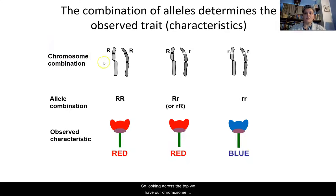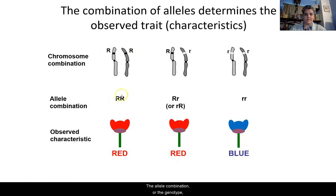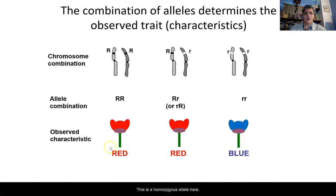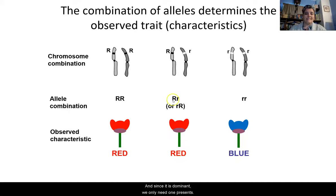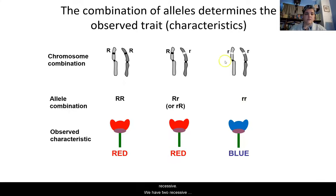The combination of these alleles determines the observed trait — combination of alleles determines phenotype. Looking across the top: we have a capital R and capital R. The genotype is RR, and the phenotype is red — homozygous. We have a heterozygous where we have capital R and lowercase r; since red is dominant, we only need one present, so that flower is going to be red. Here we have a homozygous recessive — two lowercase r's — so our flower is going to be blue.